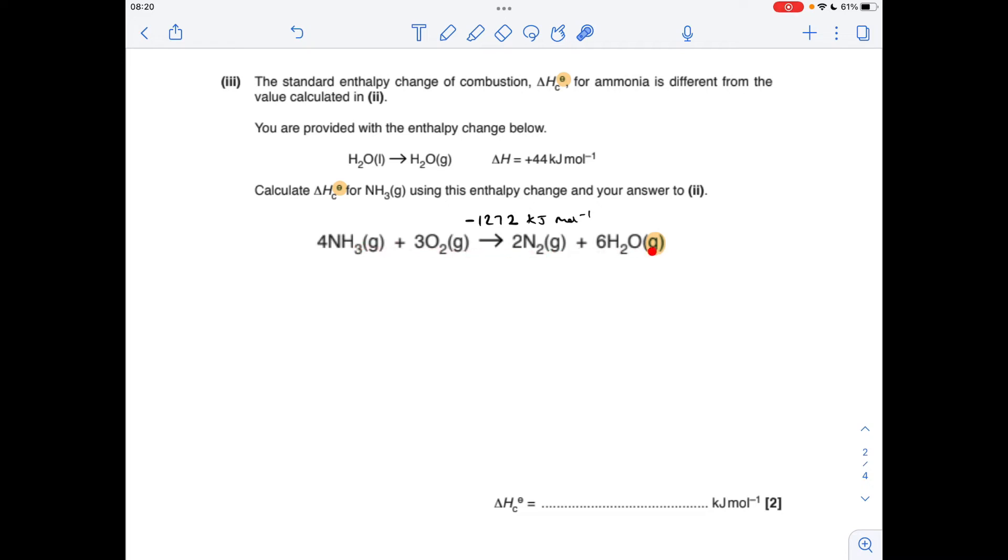The equation here wasn't carried out under standard conditions because we've got gaseous H2O. Standard conditions, so 298 Kelvin, H2O is a liquid. So what we've got to do is keep the cycle going, if you like, or keep the process going until we get 6H2O liquid.